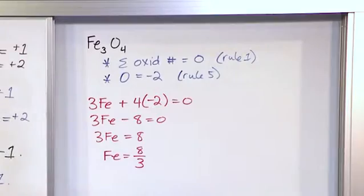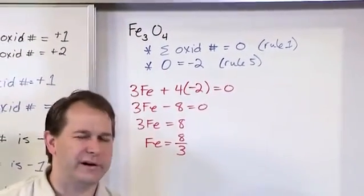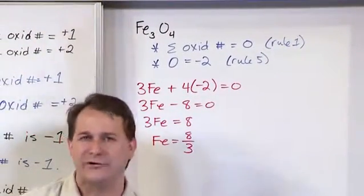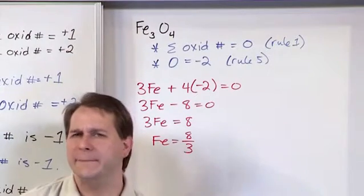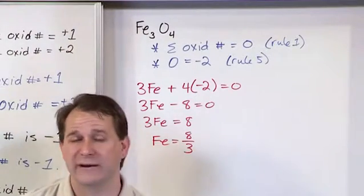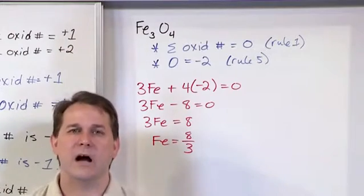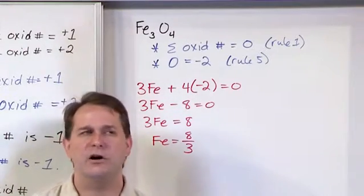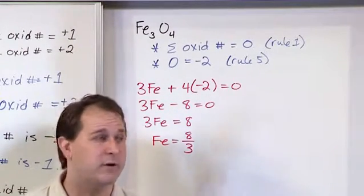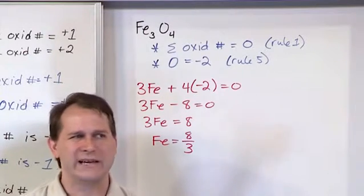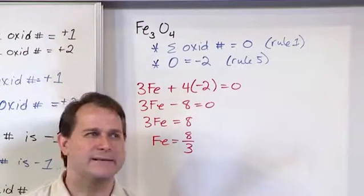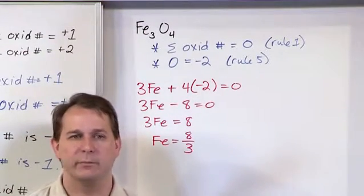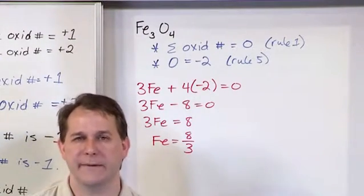So look at this for a second and scratch your head. 8 over 3, it's not a whole number, it's a fraction, right? So how can that be? Does that make sense? And this is what I'm trying to say. Sometimes the oxidation numbers you get aren't going to make sense. We've already seen that with other problems. We get an oxidation number like positive 7 for chlorine or something, and then we look and we're like, how can that be?